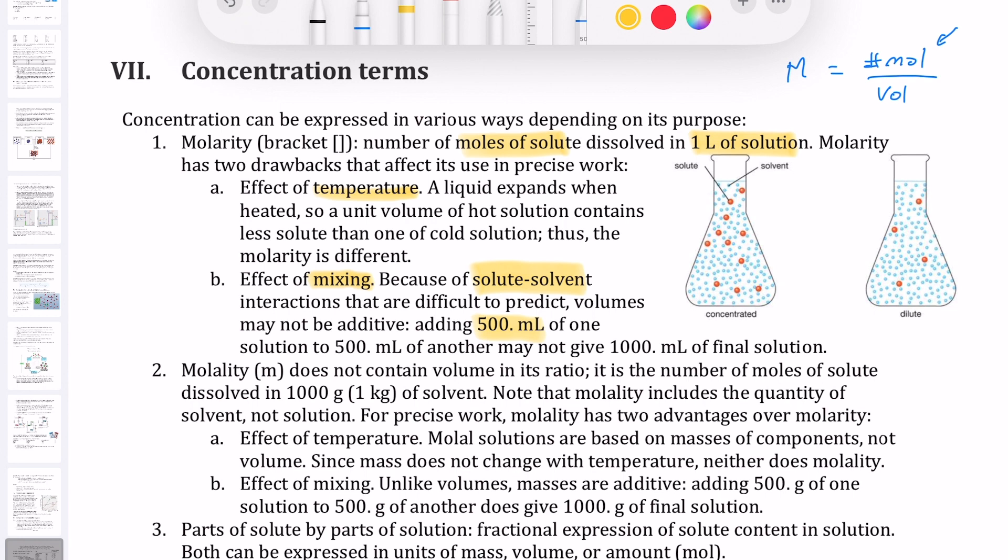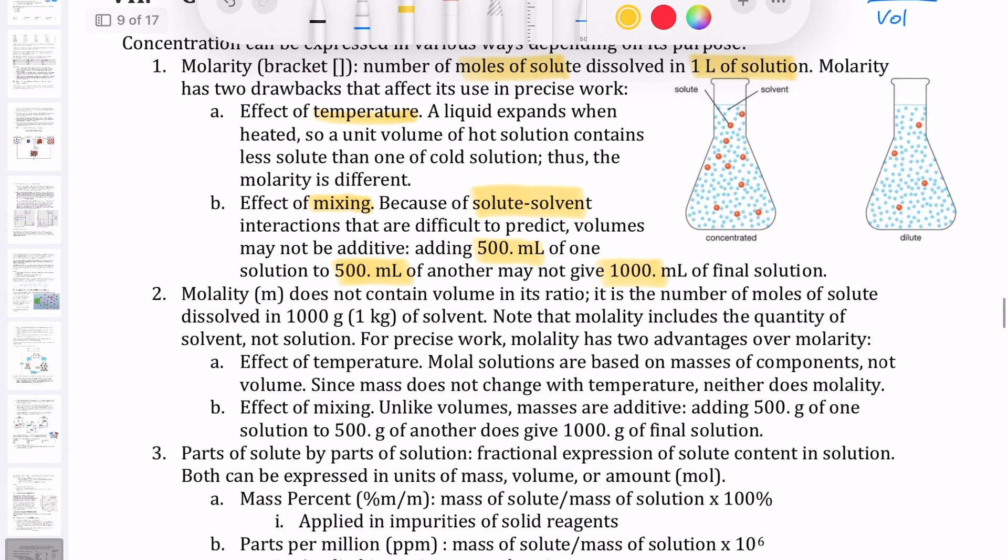the volumes that you add may not exactly add up to the sum. So, for example, you may add 500 milliliters of one thing with 500 milliliters of the other thing, and that may not necessarily give you 1000 milliliters, it might give you, say, 999. So there is a slight error associated with just doing those additions because of this mixing problem.